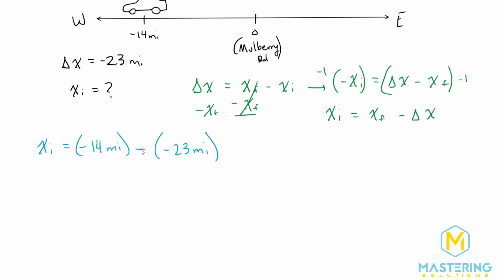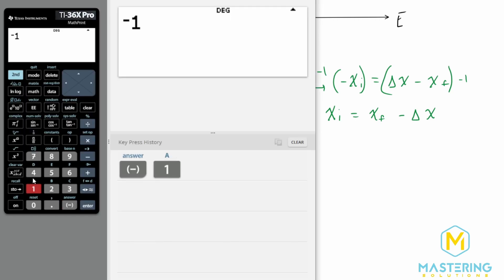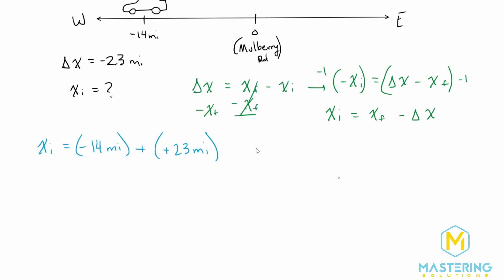Subtracting a negative is the same as adding a positive. So negative 14 plus 23 equals an x initial of positive 9 miles.